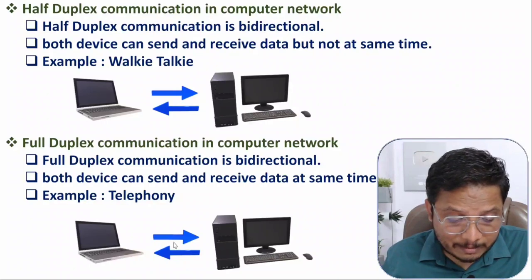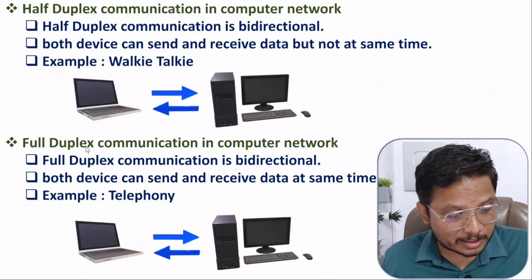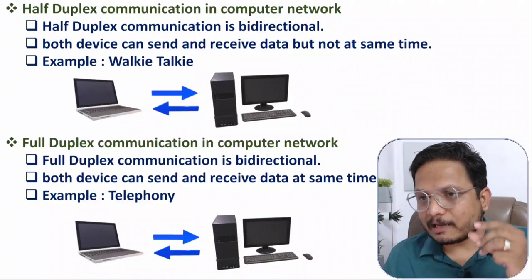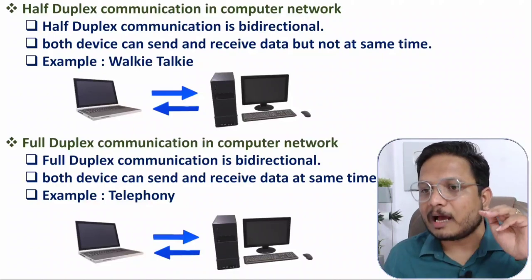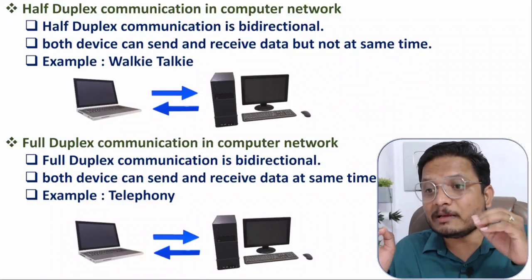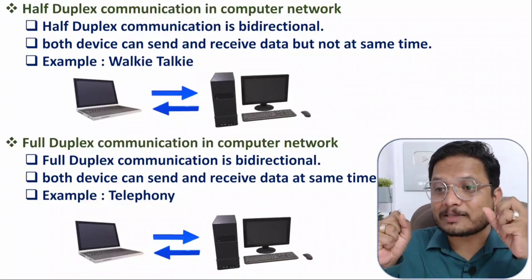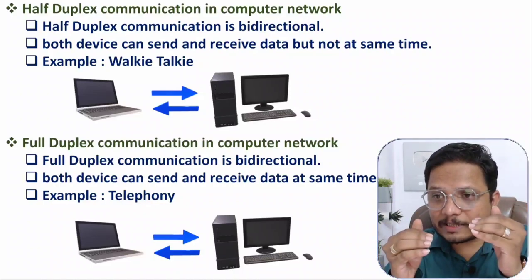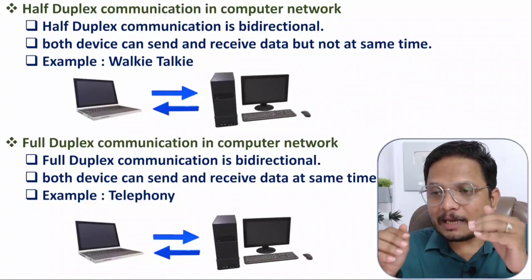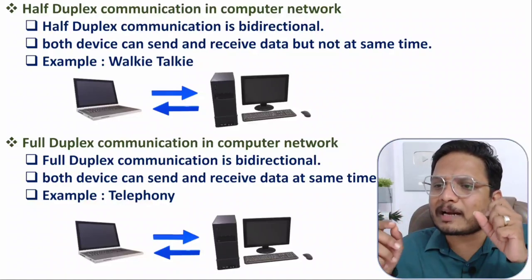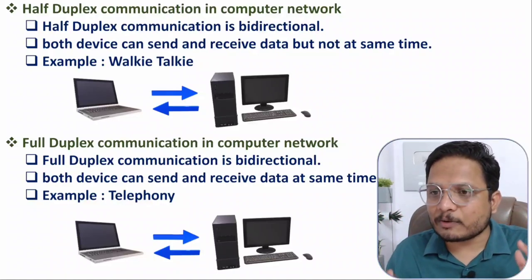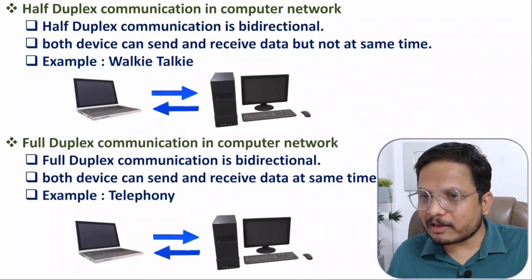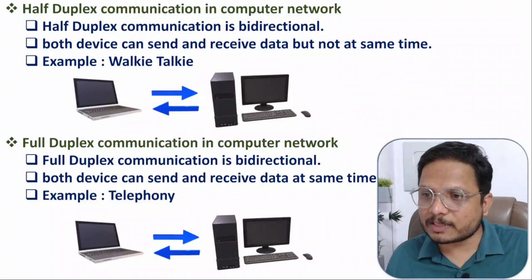So these are the three categories of communication: simplex means unidirectional; half duplex is bidirectional but both devices cannot send data at the same time; with full duplex, bidirectional simultaneous communication is possible — both can transmit and receive data at the same time. I hope that is clear. Please note any questions in the comment section. Thank you for watching.